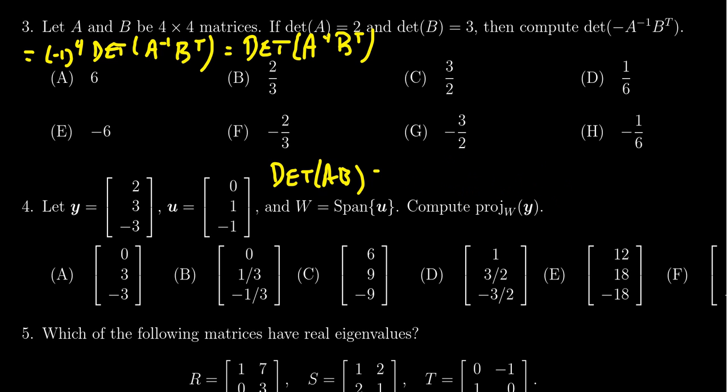What this tells us here is that if we're taking the determinant of A inverse times B transpose, then this will become the determinant of A inverse times the determinant of B transpose. In which case, then we'll finish this up with two more properties to mention.